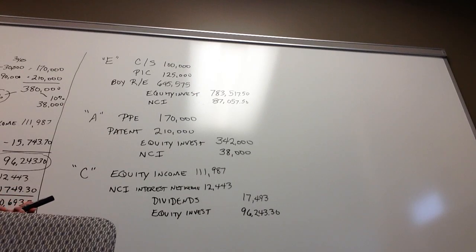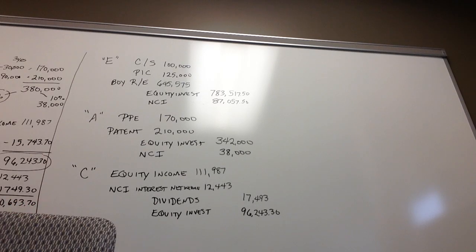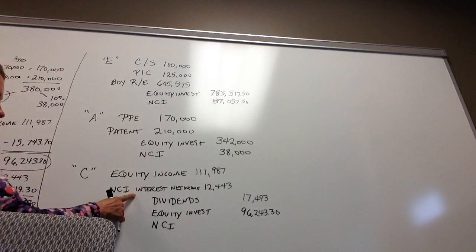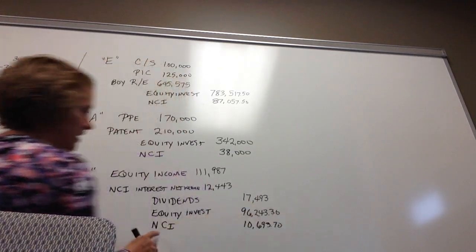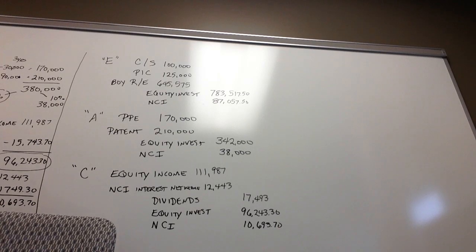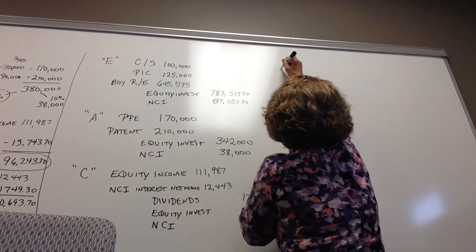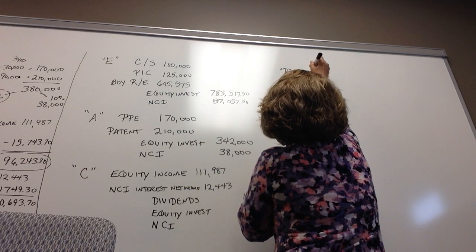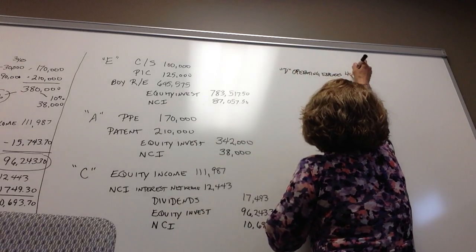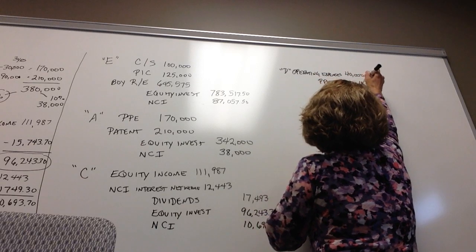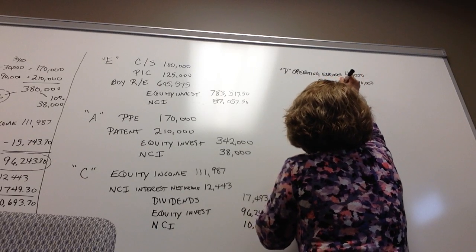Double-checking the C entry: the remaining difference — NCI net income ($12,443) minus NCI dividends ($1,749.30) = $10,693.70 — goes into the NCI account. For the D entry, it's the same as before: debit operating expenses $40,000, credit property, plant, and equipment $10,000, and credit the patent $30,000.